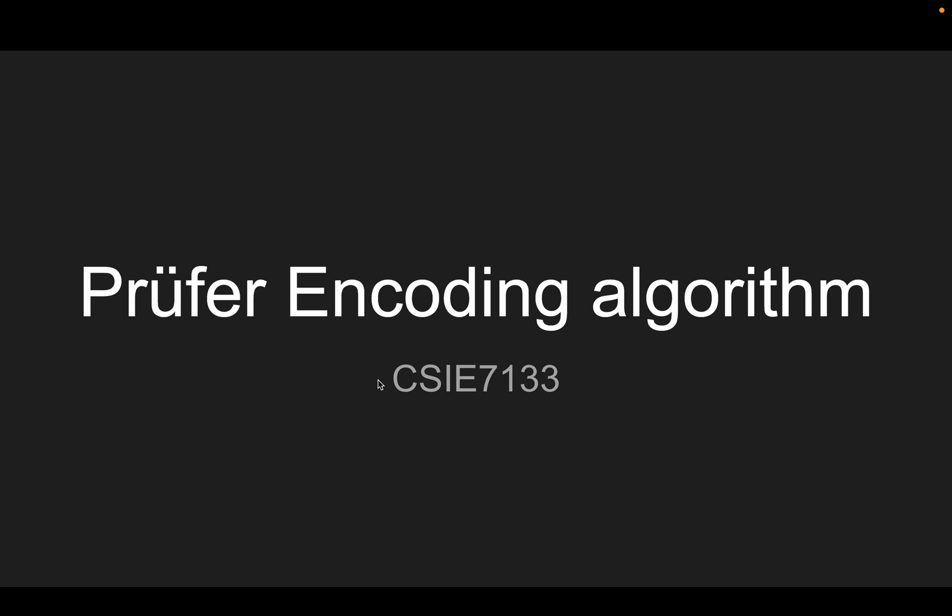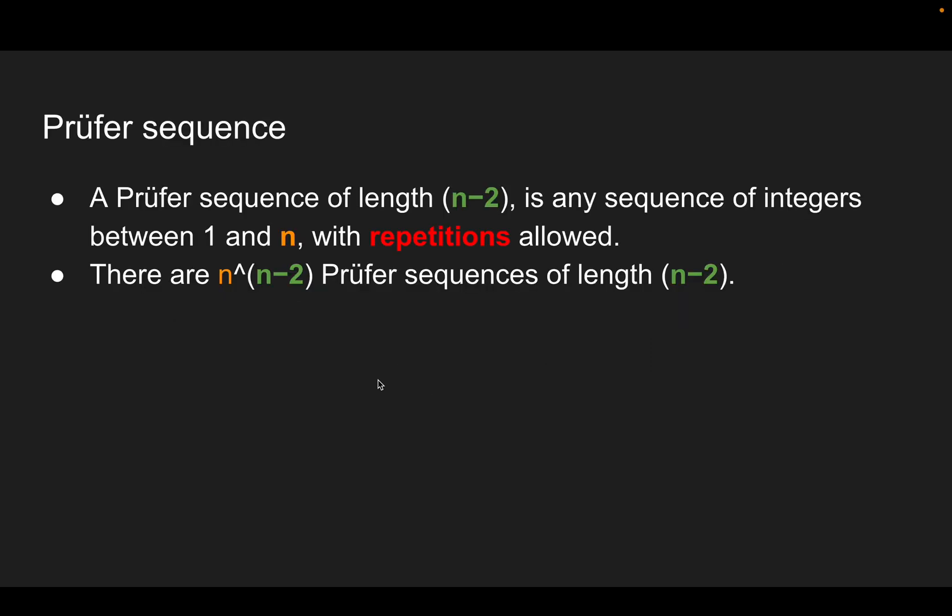The Prüfer encoding algorithm. First, we define the Prüfer sequence. The Prüfer sequence of length n minus 2 is any sequence of integers between 1 and n, with repetitions allowed.